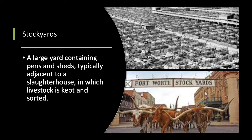The next word is stockyards. A stockyard is a large yard containing pens and sheds, typically adjacent to a slaughterhouse, in which livestock is kept or stored. Here in Texas, we have the famous Fort Worth Stockyards. To this day they do a cattle drive — maybe twice a day — letting longhorns loose down the roads of the stockyard, which have now turned into shops, restaurants, dance halls and things. They drive the cattle down the road and put them back in the pens, just to pay tribute to the history of the cattle drives.